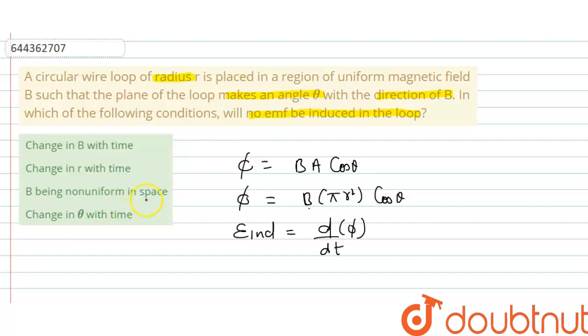if B remains the same with respect to time, there is no change in strength of magnetic field, then there will be no induced EMF. So correct option is this. I hope you understood this explanation, thank you.